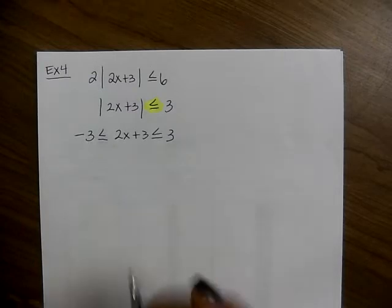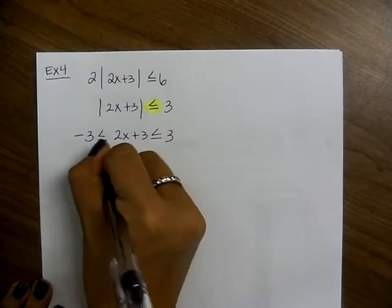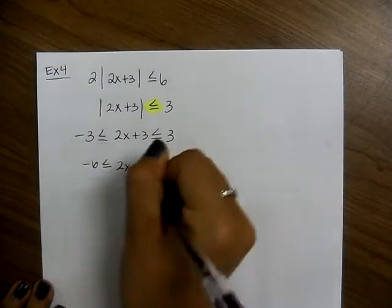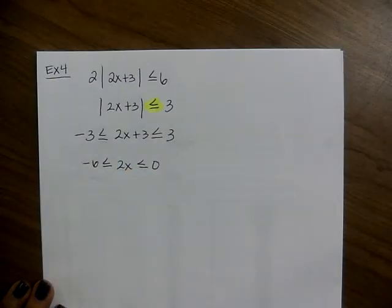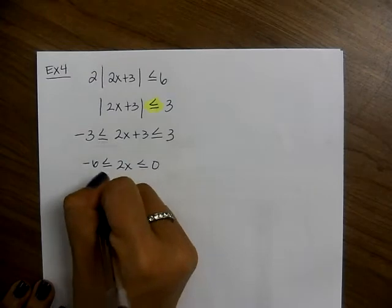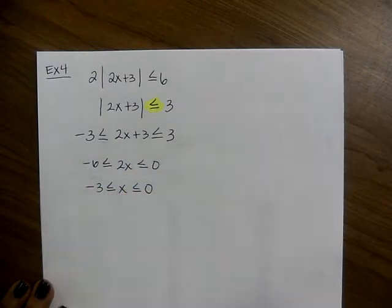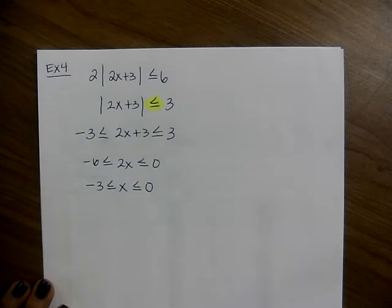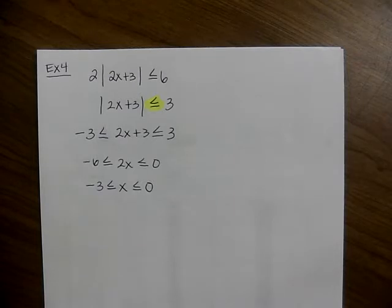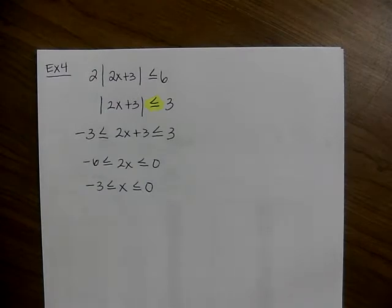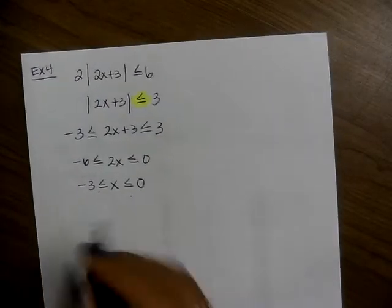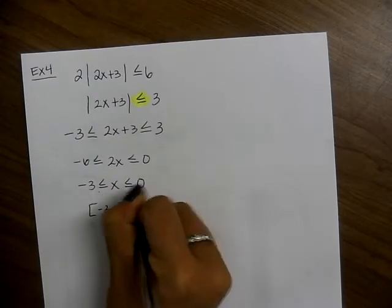Now we're ready to solve. We subtract 3 everywhere: negative 6 is less than or equal to 2x, which is less than or equal to 0. Divide by 2: negative 3 is less than or equal to x, which is less than or equal to 0. Both get brackets because they're both less than or equal to. Smallest number is negative 3, going to 0.